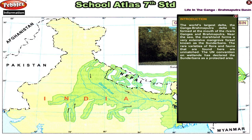Life in the Ganga-Brahmaputra Basin. The world's largest delta — the Ganga-Brahmaputra delta is formed at the mouth of the rivers Ganga and Brahmaputra. Near the sea, the marshland forms a very extensive mangrove forest known as the Sundarbans. The rare varieties of flora and fauna found here are unmatched. The UN Convention on Wetlands has declared the Sundarbans as a protected area.